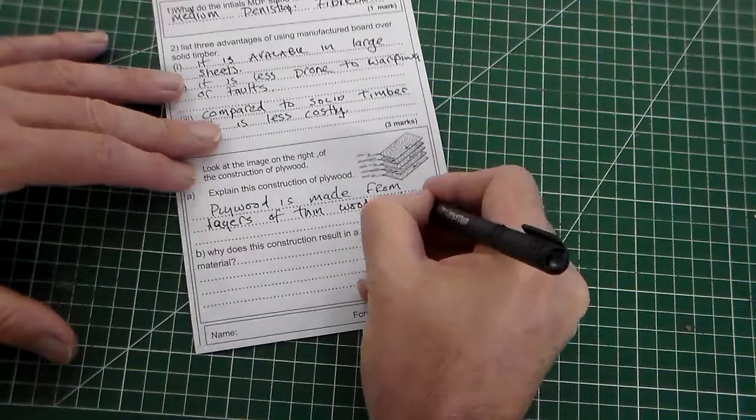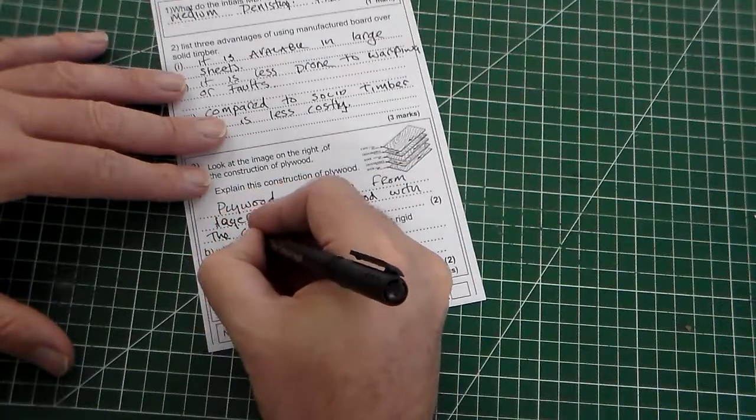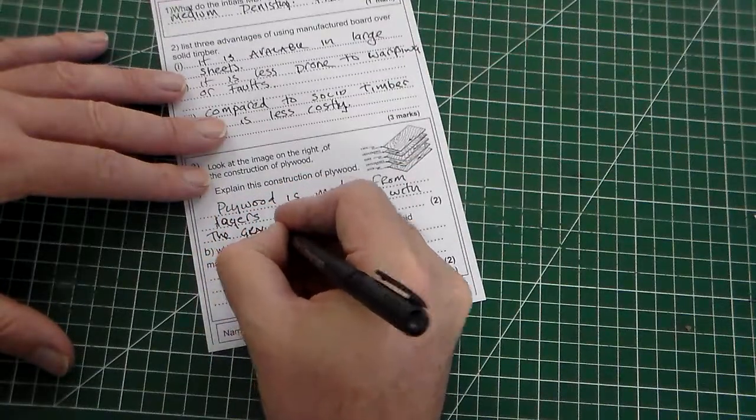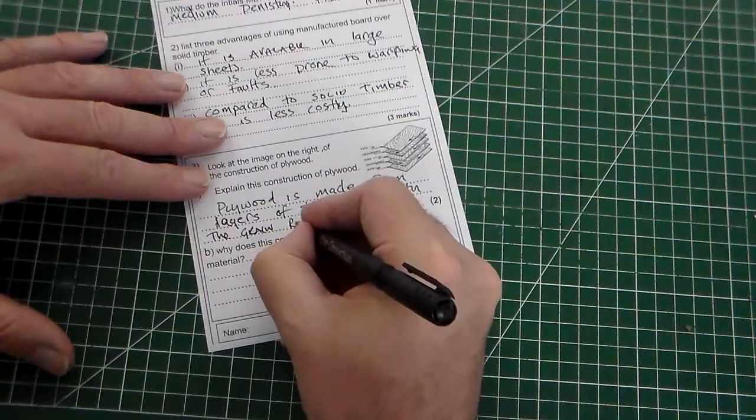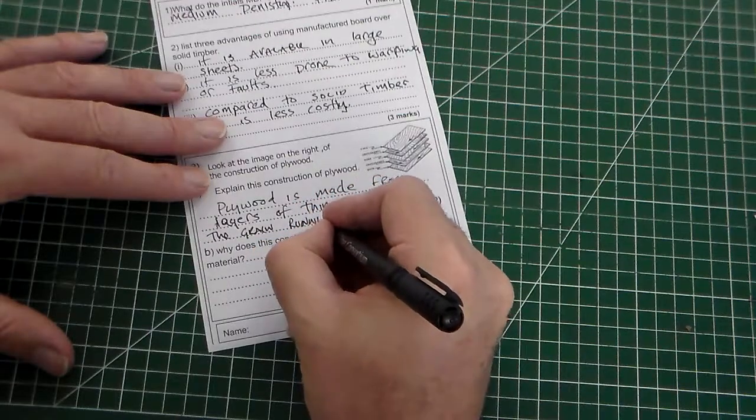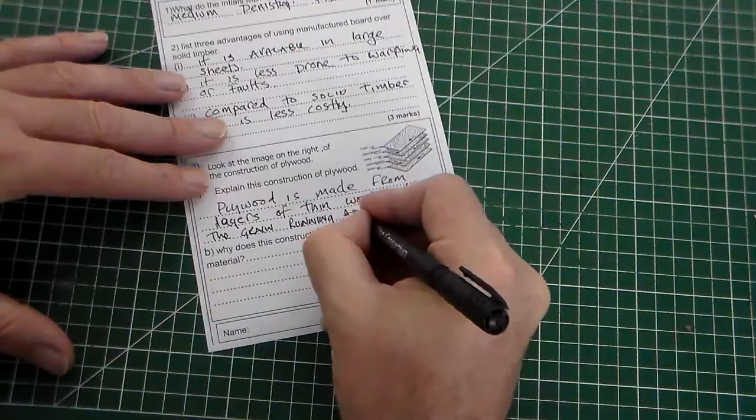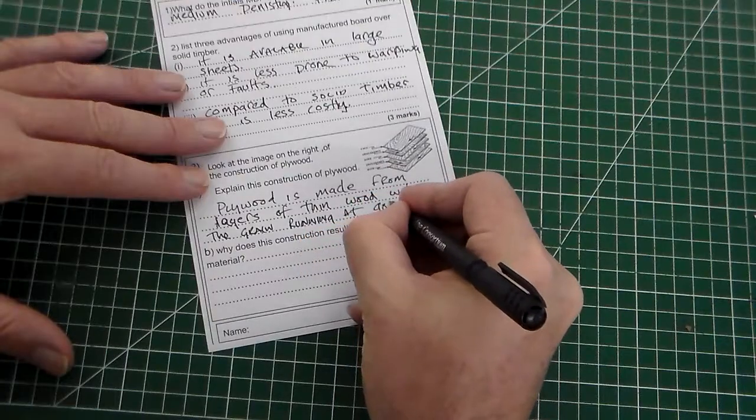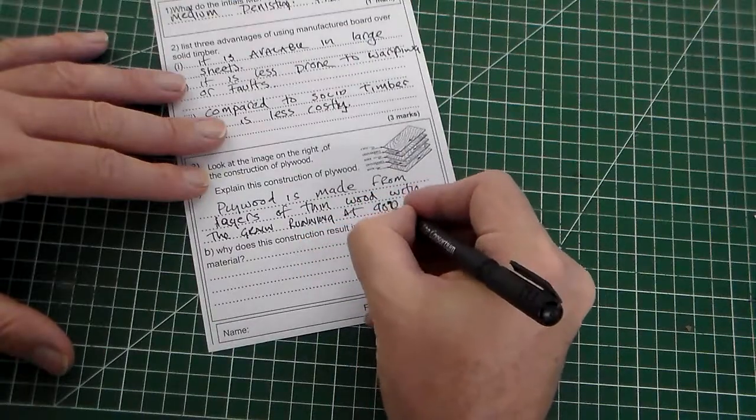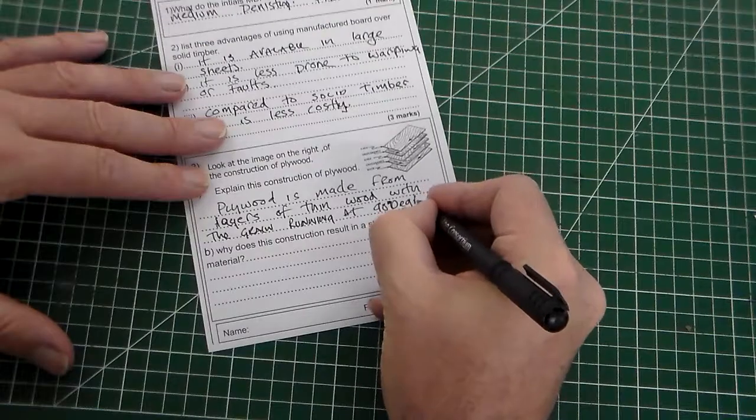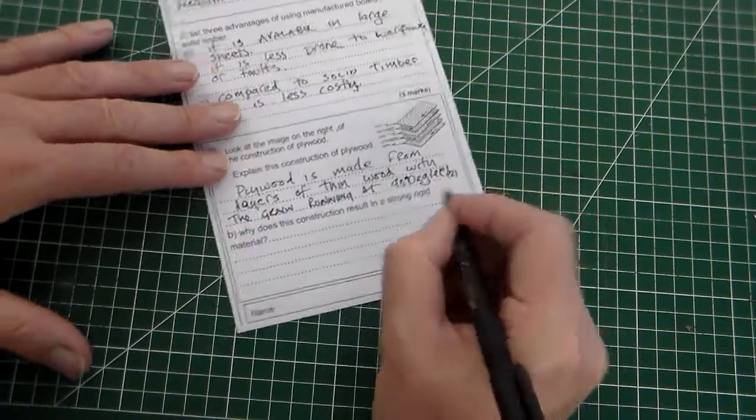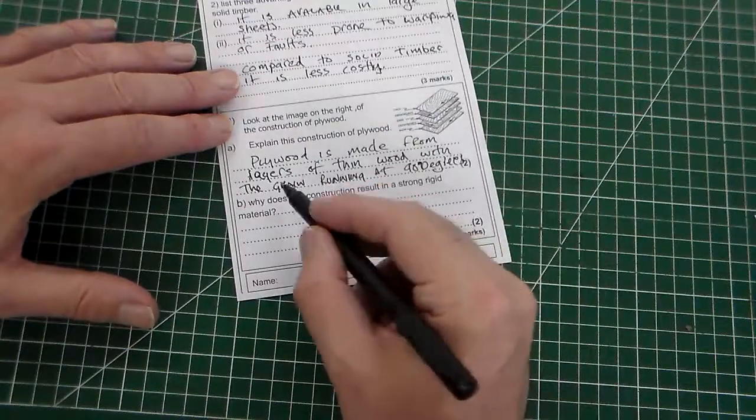With the grain running at 90 degrees. I'm going to run out of room there. You could say at 90 degrees to each other.